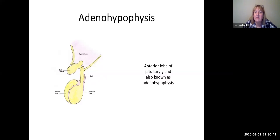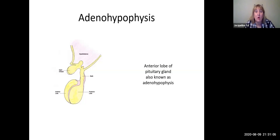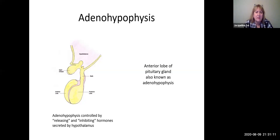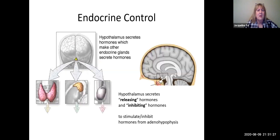Now we're going to start getting into the nitty-gritty of the endocrine system. We are going to venture into the anterior lobe of the pituitary gland, known as the adenohypophysis. In the adenohypophysis, we have cells that will secrete hormones — they make them and secrete them. However, the directions are coming from the hypothalamus above, which sends down releasing hormones or inhibiting hormones to control production.